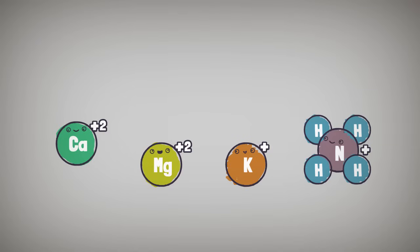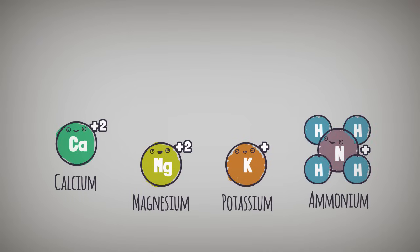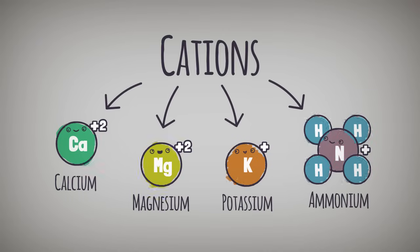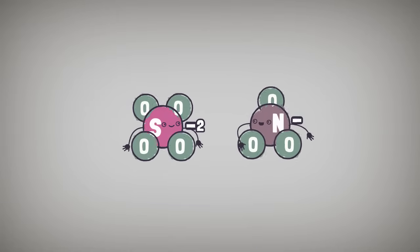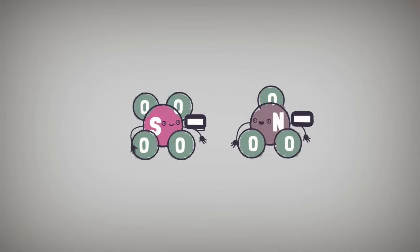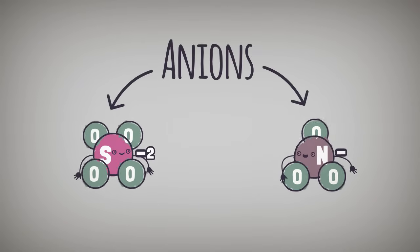Whether they are held tightly or not, the nutrients are available to the plant in exchange for other cations. Not all nutrients are cations, however. Some are actually negatively charged compounds, or anions.